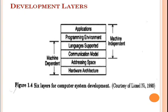High-level languages and communication models are dependent on the architectural choice made in a computer system. From a programmer's viewpoint, these two layers should be architecture transparent. Programming languages such as Fortran, C, C++, and Pascal can be supported by most computers; however, communication models — shared variables versus message passing — are mostly machine dependent. The compilers and operating system support should be designed to remove as many architectural constraints as possible from the programmer.